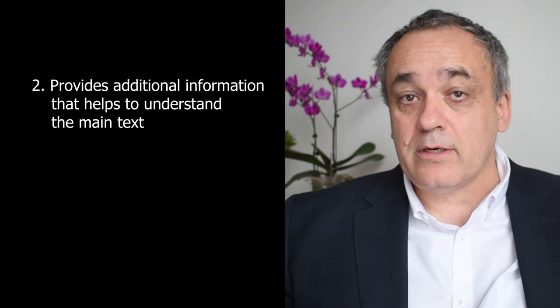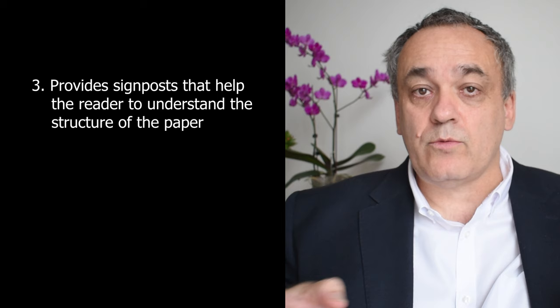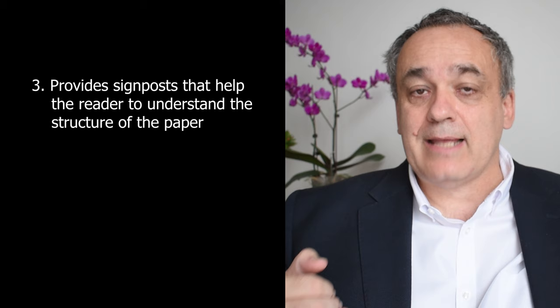In this video I want to elaborate on what I consider the ideal footnote — this is of course subjective, reflecting my own background in literary and philological approaches rather than the social sciences. For me, the ideal footnote does three things. Number one, it references sources precisely and may include some information about those sources, making a dry reference much more interesting. Number two, it provides additional information that helps understand the main text — details not relevant enough for the main text but still providing useful context. Number three, it provides signposts that help the reader understand the structure of the paper and the line of thought of the author.